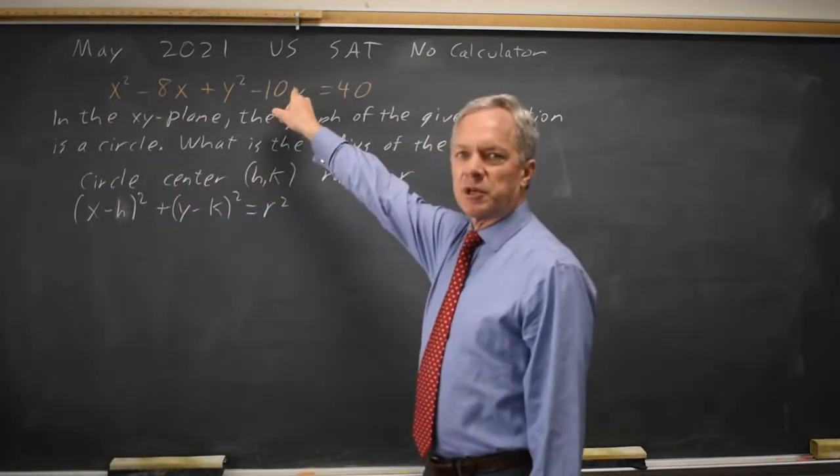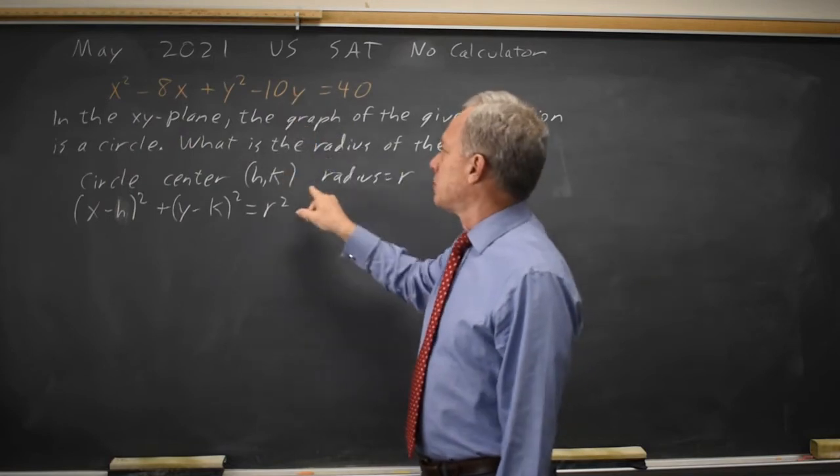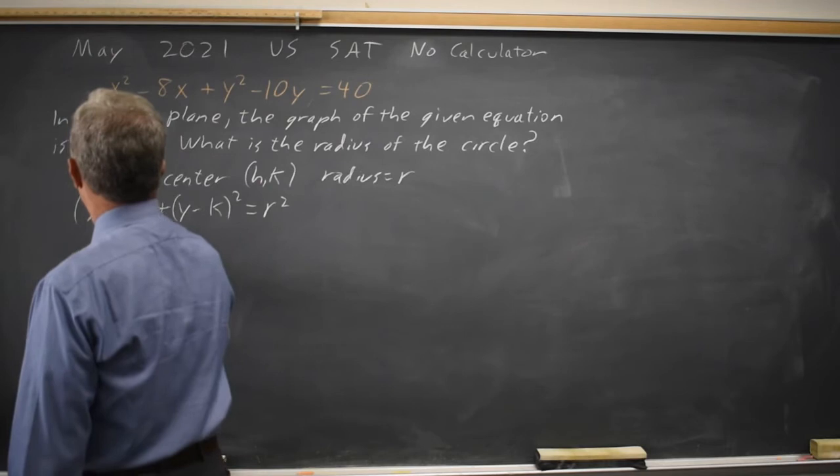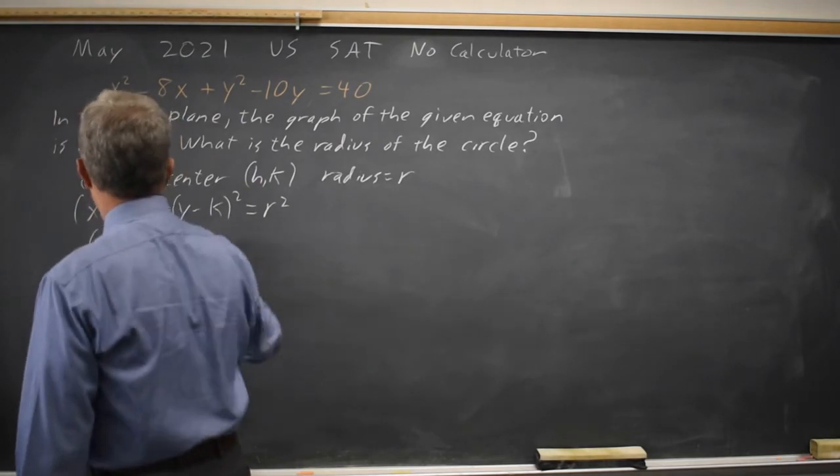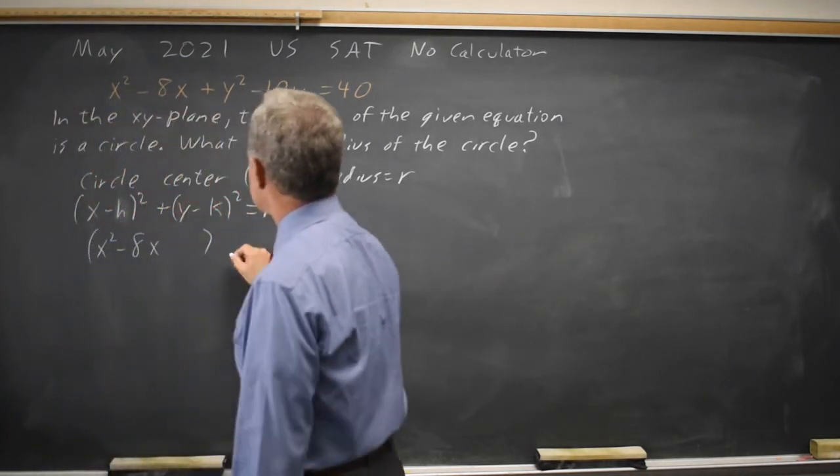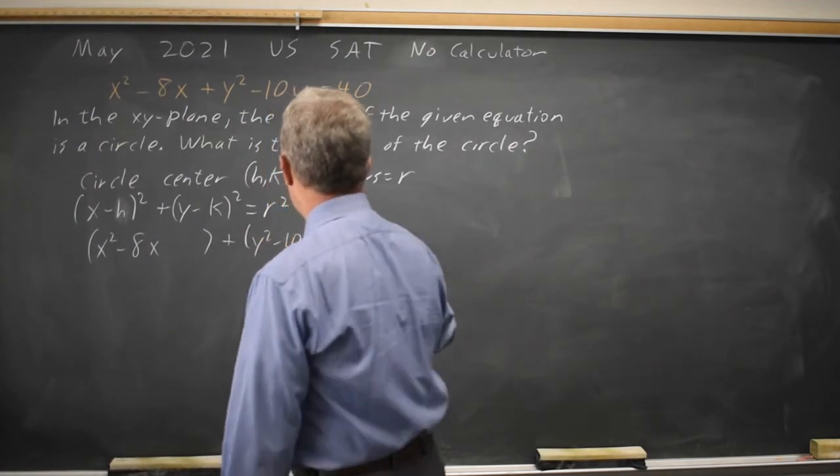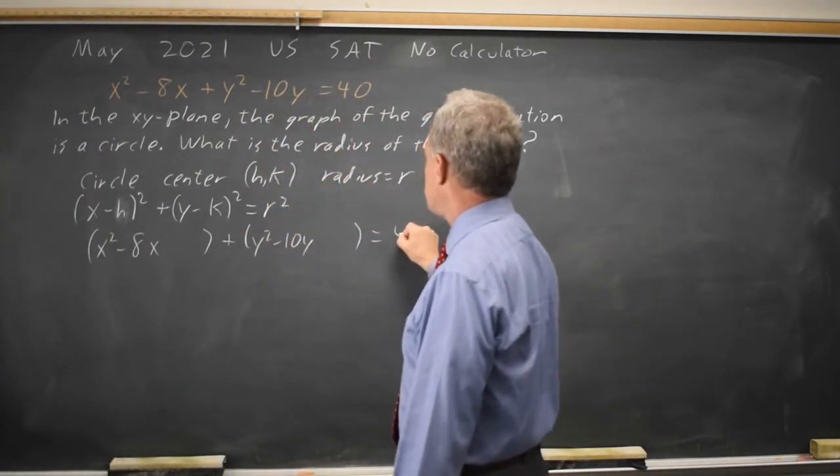If we complete the square here, we'll find both the center and the radius. They're asking for the radius. I'll write it as x² - 8x, and I'll leave a space to complete the square, plus y² - 10y. I'll leave another space to complete the square equals 40.